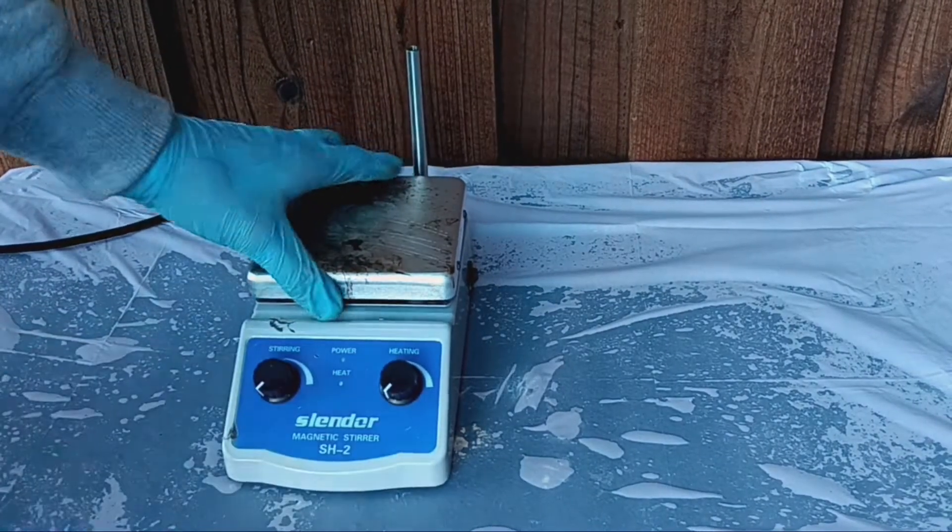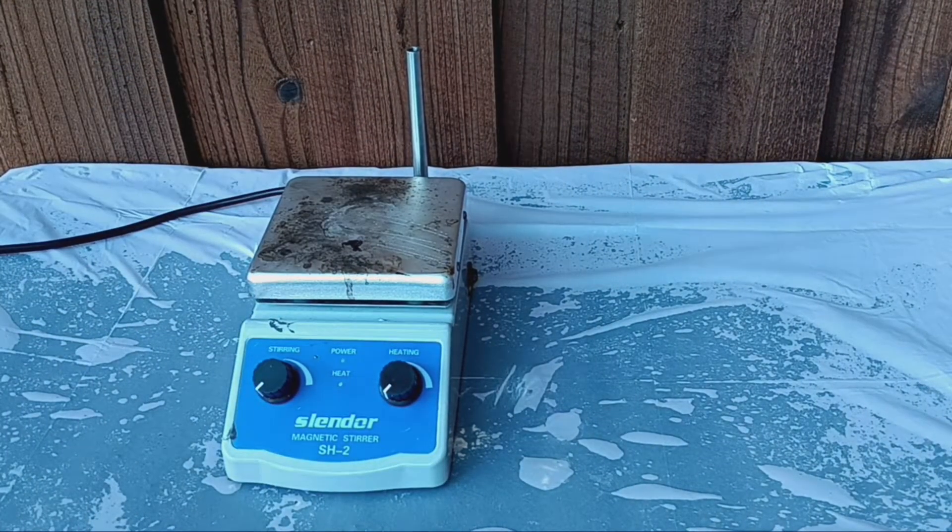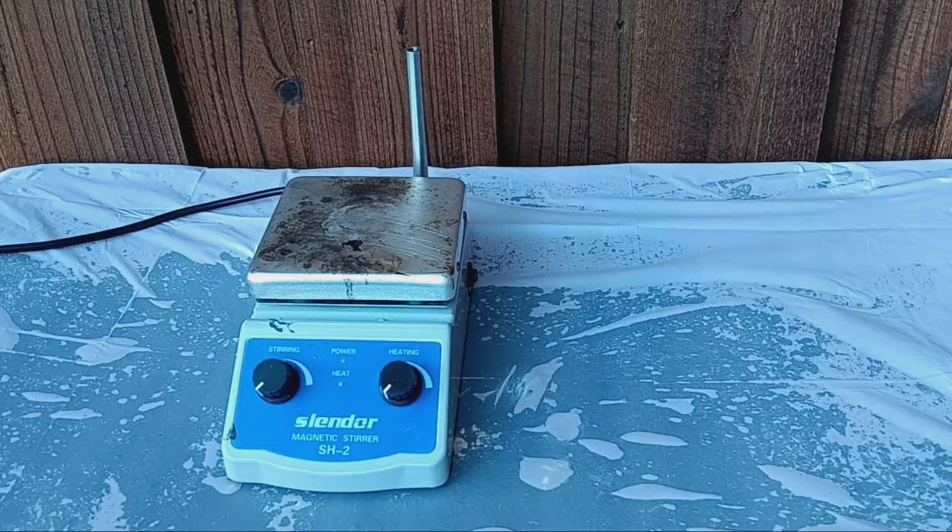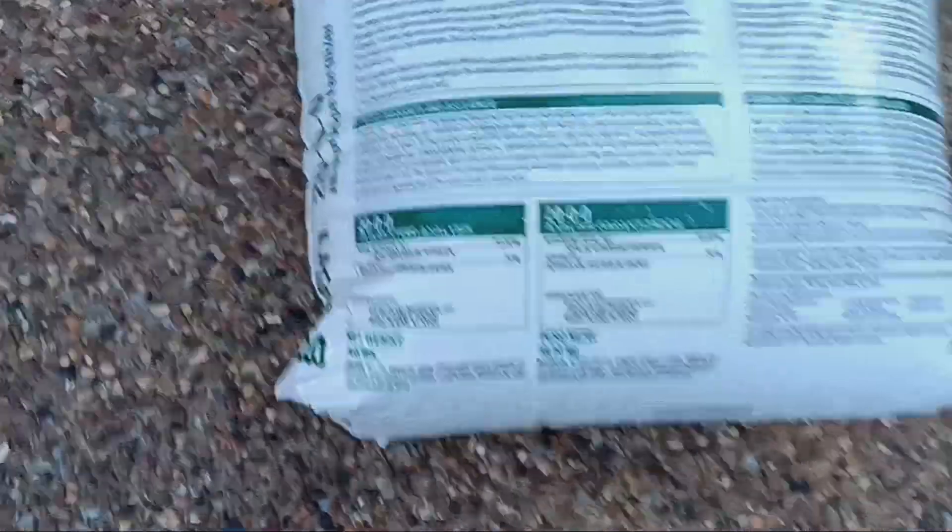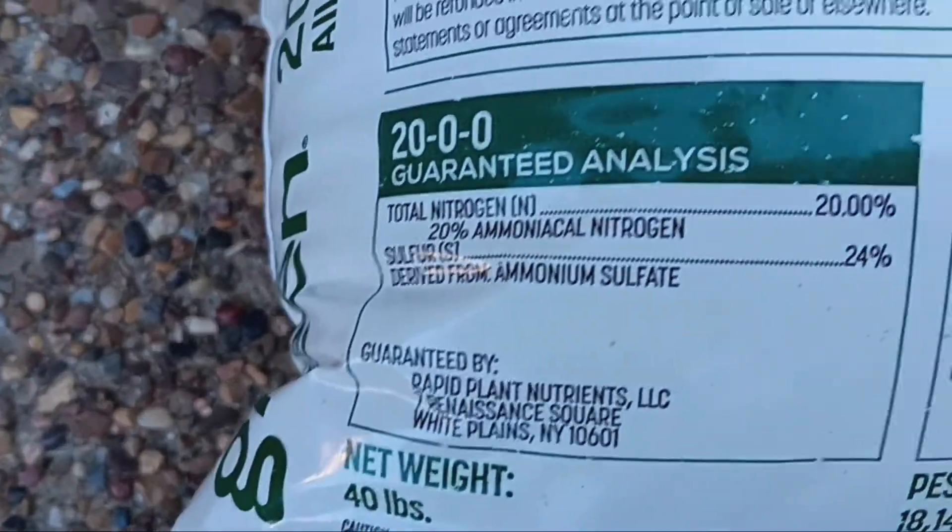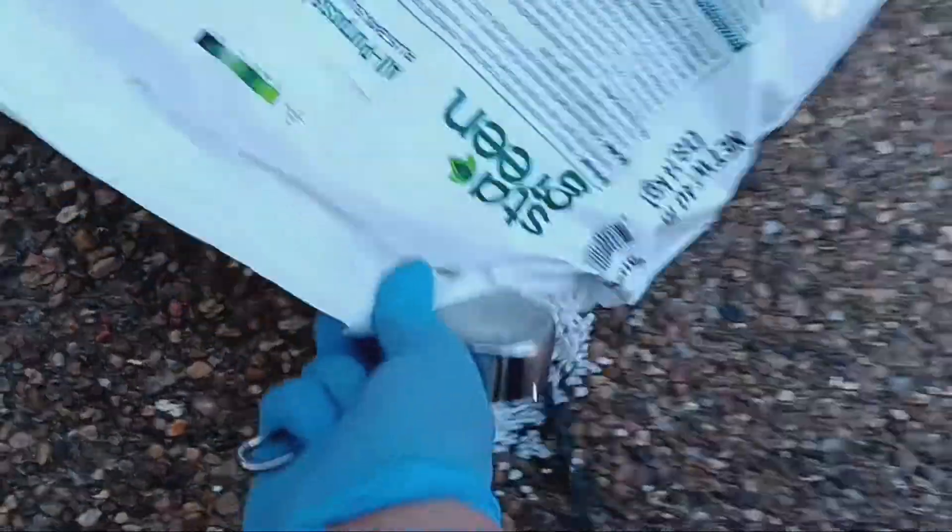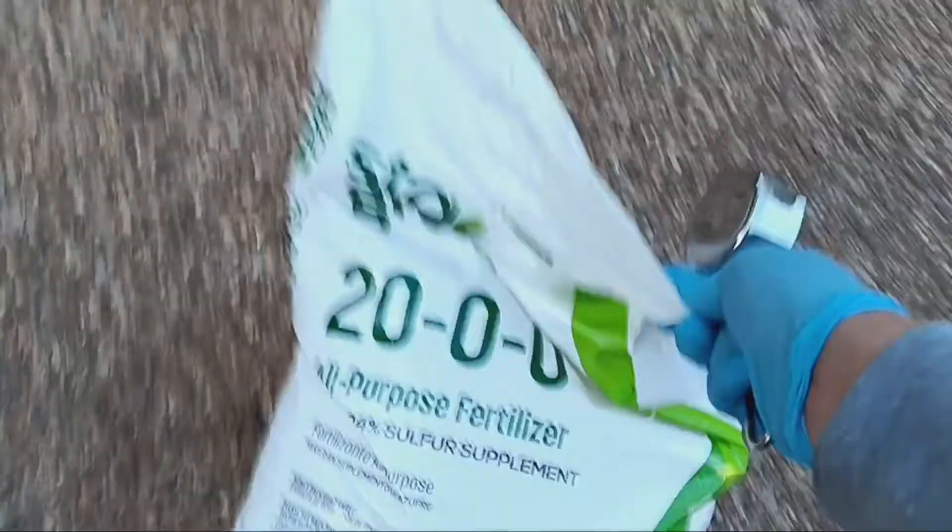How's it going? Today, I'm going to be showing you guys how to not make chlorine gas. The first thing you're going to need is any fertilizer with ammonium nitrate, ammoniacal nitrogen, or ammonium nitrogen. It doesn't really matter. They all do the same thing.